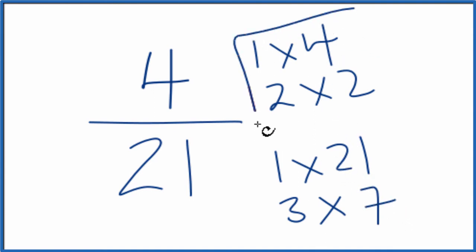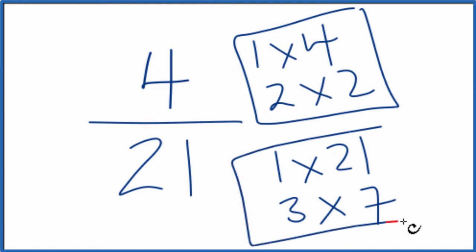So when we look for a common factor here in the numerator and then in the denominator, 1 is the only thing that goes into both 4 and 21 evenly.